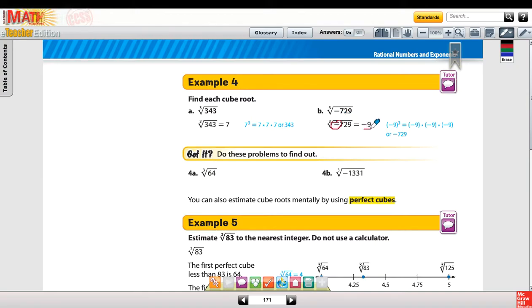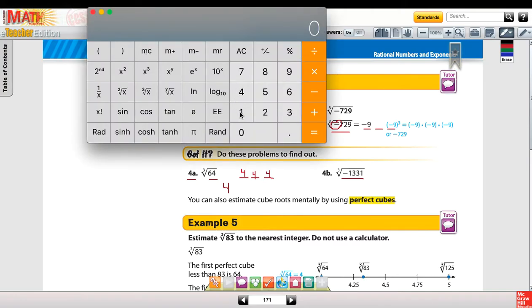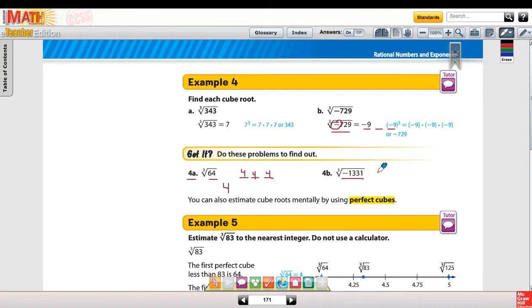So for 4a, 64. Remember what number times itself three times gave you 64? Hopefully you do. 4 times 4 times 4 is 64. So the cube root of 64 is 4. What you may not know is 1,331. And so you can just start guessing and checking numbers. In my case, I'm thinking, well, 10 cubed is 1,000, so it has to be bigger than 10. If I take 11 cubed, I get 1331. But in this case, it's a negative 1331, so it would be a negative 11 for the cubic root. And you can also estimate using those perfect cubes you have memorized.